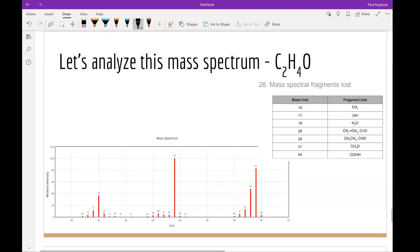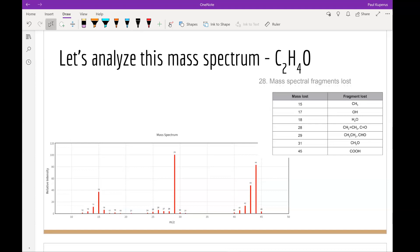We're going to look at the mass spectrum for C2H4O. Again, we can do the IHD for this. And we see 0.5 times 2 times 2 plus 2 minus 4. And we get an IHD of 1. So again, we have one double bond present or a ring, but with only two carbons, we can't have a ring.